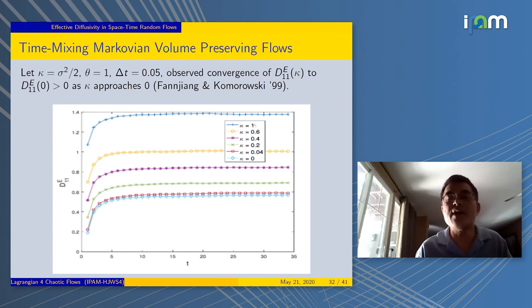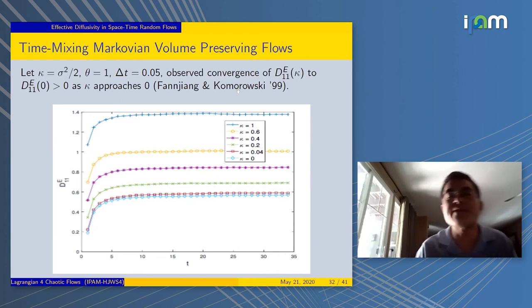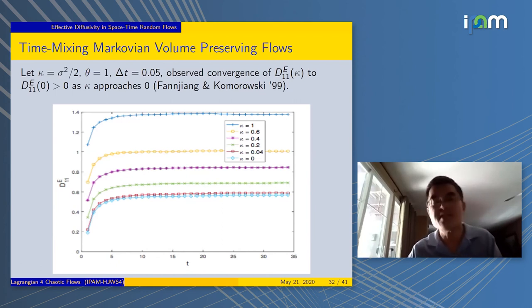If we take κ to be a small number, let's say you go from κ equals 1 to 0.2, 0.04, and all the way down to 0. What happened to these second moments divided by 2t? You see here that they level off pretty quickly. This is because our θ is 1. You have enough decorrelation. As you reduce κ, these curves start to converge. The values eventually converge around here.